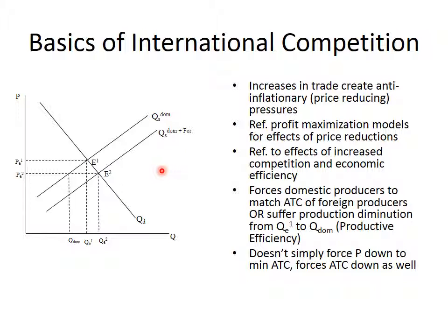When we start to trade, if we allow foreign competition into a particular country, that's going to increase supply. So we're back to our original discussion of supply from lecture number four. What that's going to do is increase supply and create a downward pressure on prices.